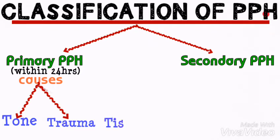The third T stands for tissue. Tissue issues occur due to retained placenta, membrane, and blood clot. This can cause irritation to the walls of the uterus, which will result in bleeding.